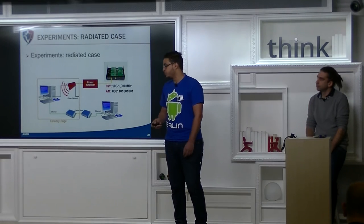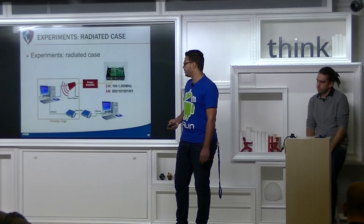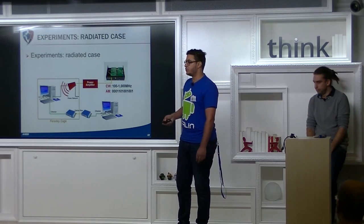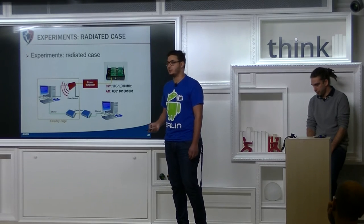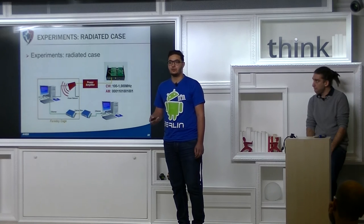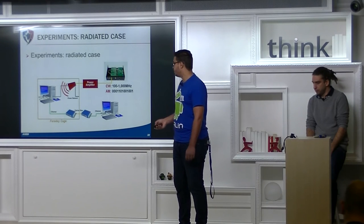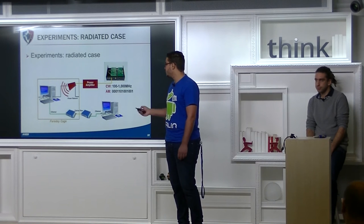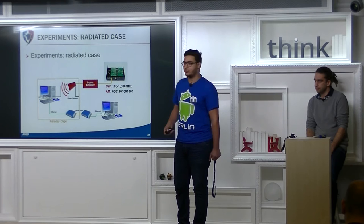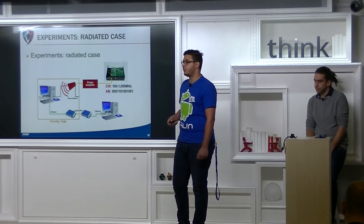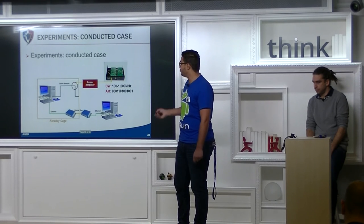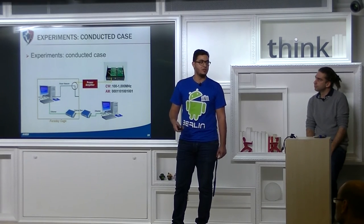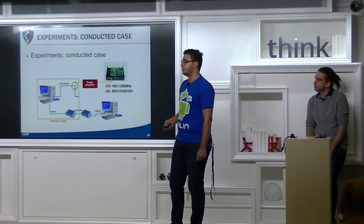So what we did: we put some computers inside a Faraday cage because we are generating large amounts of power, and for regulation purposes we have to do that. But what we can do inside is the same as outside — so that's not a limitation of the work. We put the target computer connected to another computer, and we used a USRP to generate signals. We used an antenna for radiation testing and also put an injection probe into the power network to see if we could induce perturbations and exploit this attack vector.